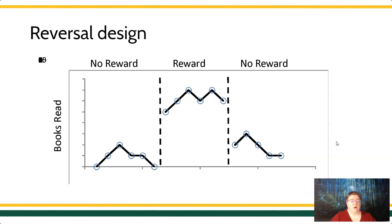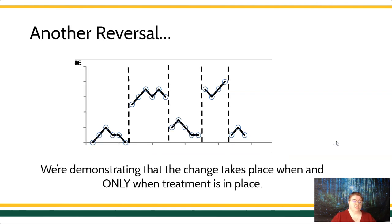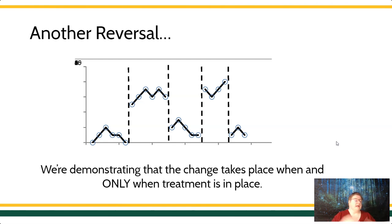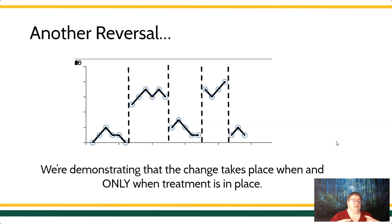If I wanted more confidence, I could put in another treatment condition. What I'm demonstrating here: low data in a baseline condition, high data in a treatment condition, low data in a baseline condition, high data in a treatment condition, low data again in a baseline condition. I could just keep doing this forever — put it in, take it out, put it in, take it out — and see if there's a corresponding change in the behavior. The whole reason you do this kind of hokey pokey of experimental control is to demonstrate that behavior is changing when and only when treatment is put into place.